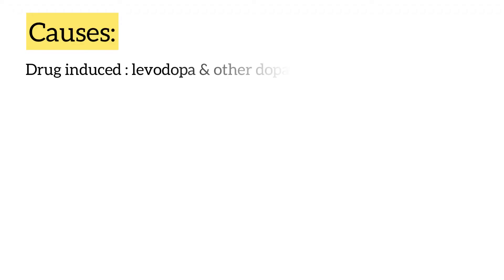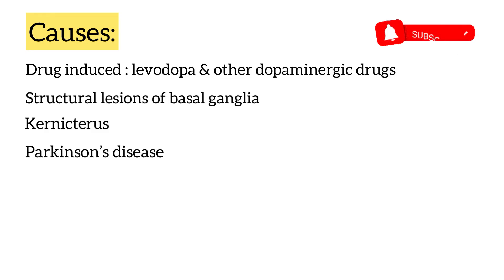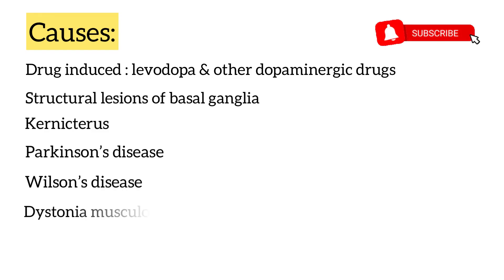What are the causes of dystonia? It can be drug-induced, especially levodopa and other dopaminergic drugs, structural lesions of the basal ganglia, Parkinson's disease, Wilson's disease, and dystonia musculorum deformans.